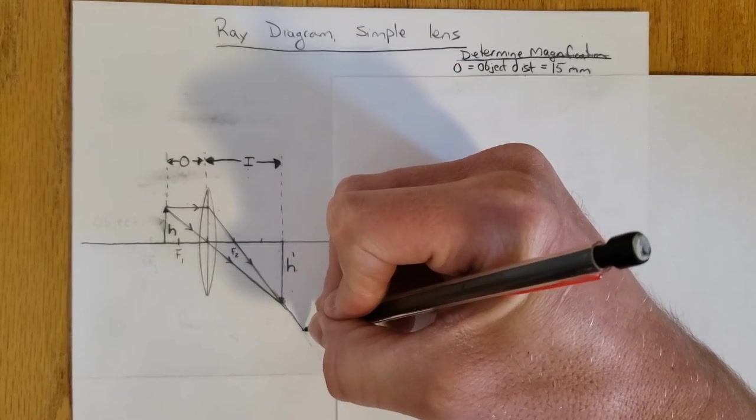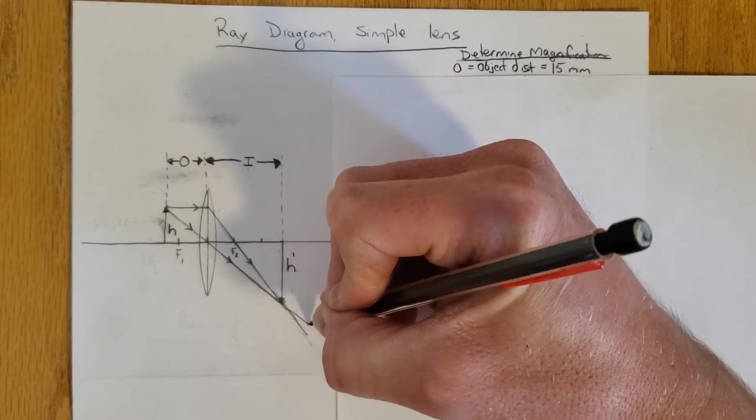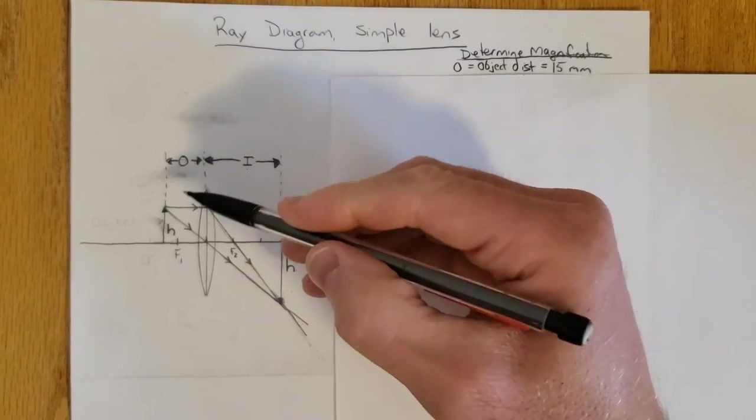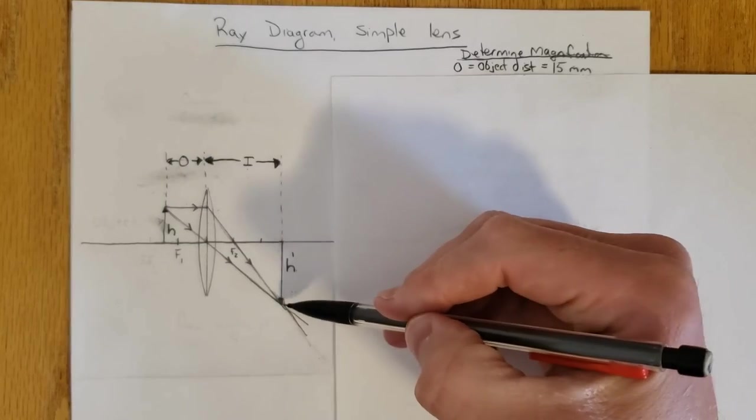You can see I've stopped drawing those rays here, but essentially you can just keep going. The image is recreated where those two rays of light converge again.